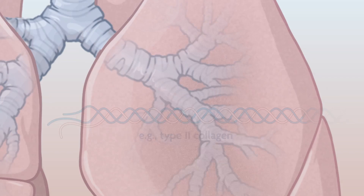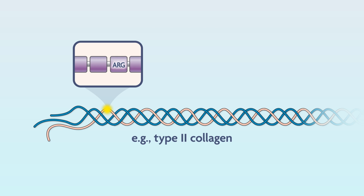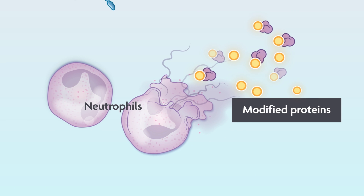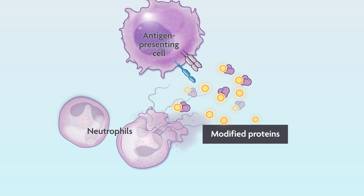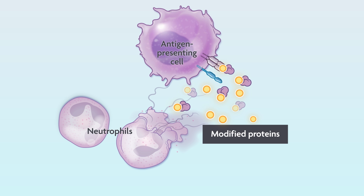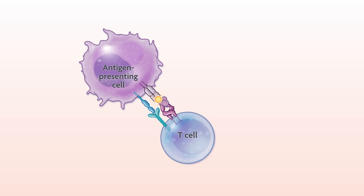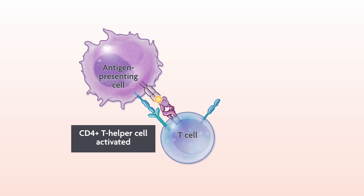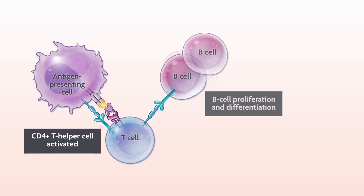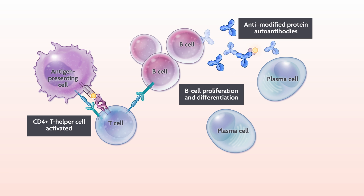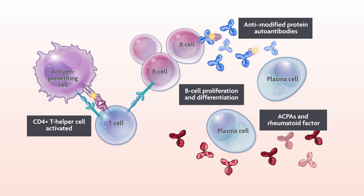Spurred by these changes, some proteins may undergo a modification called citrullination, in which an amino acid arginine is converted to citrulline. Within a predisposed individual, antigen-presenting cells see these proteins as foreign, bind to them, and migrate to the lymph nodes and mucosal lymphoid tissue. There, they activate CD4-positive T helper cells, which stimulate B cell proliferation and differentiation into plasma cells, which produce ACPAs and rheumatoid factor.